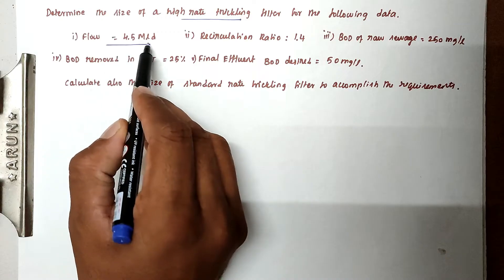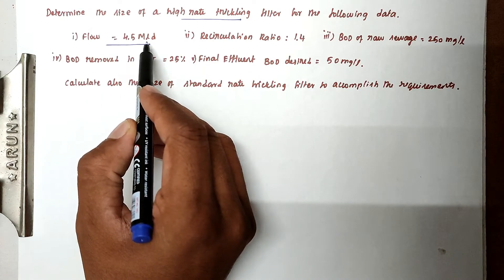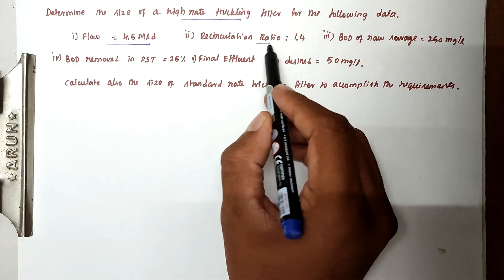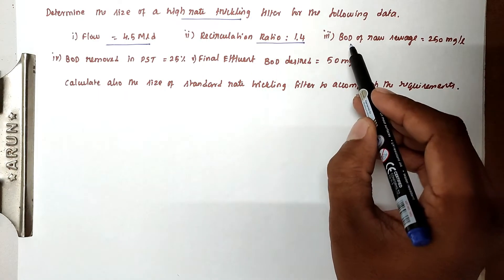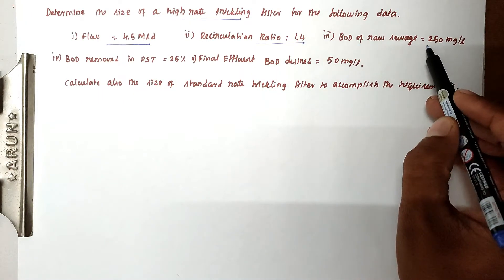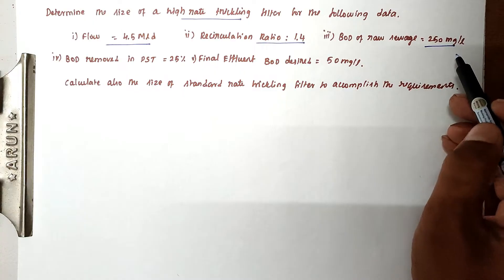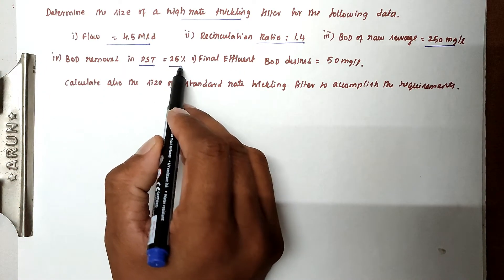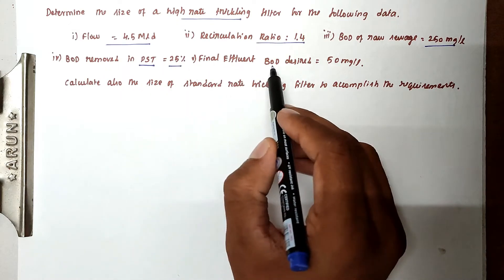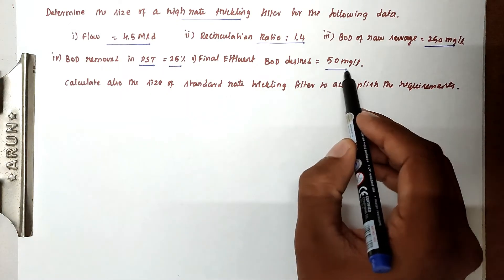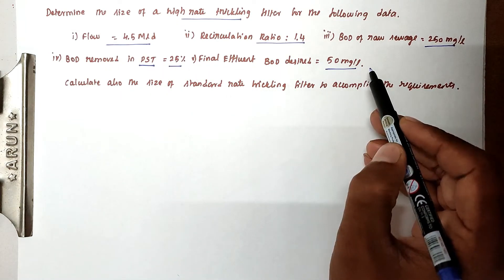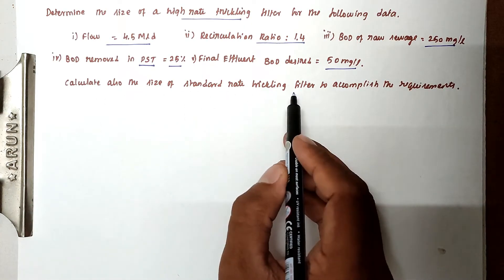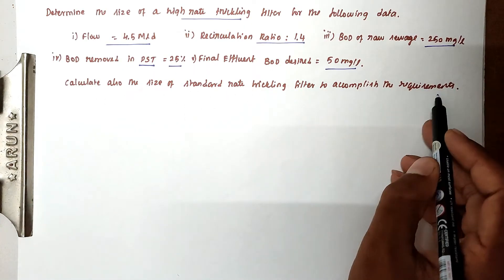The given data: flow is 4.5 million liters per day, recirculation rate is 1.4, BOD of raw sewage is 250 milligram per liter, BOD removal in primary settling tank is 25%, and final effluent BOD desired is 50 milligram per liter. Calculate the size of standard rate filter to accomplish the requirement.